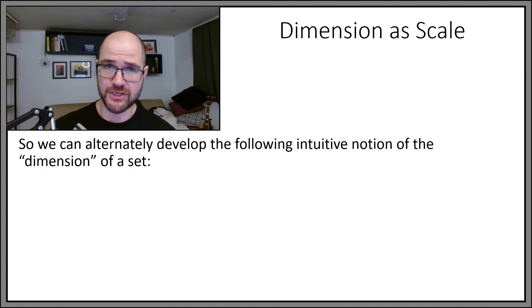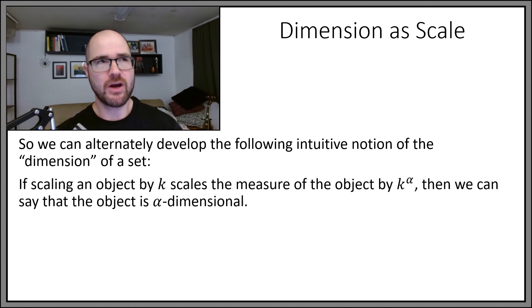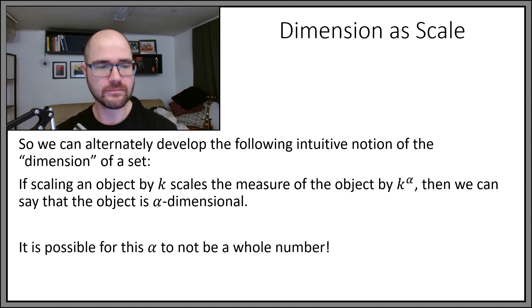So we can sort of think of dimension another way. We can say the dimension of an object is the exponent we would have to put on how the size of the object changes if we scale everything by a factor k. So if scaling by k changes the size of the object by k to the alpha, then it is alpha-dimensional. It is possible for this alpha to not be a whole number.